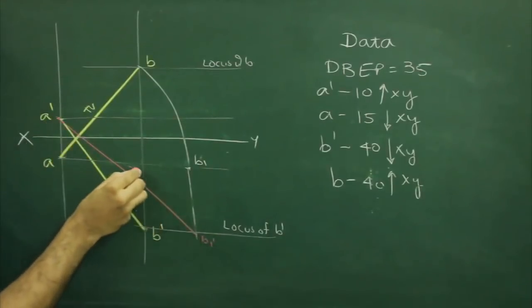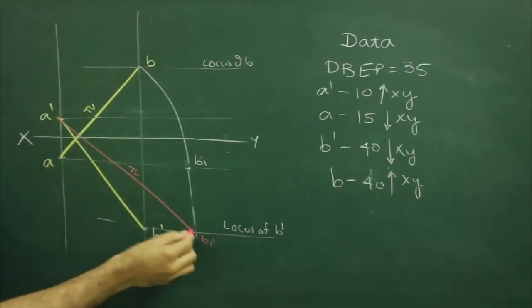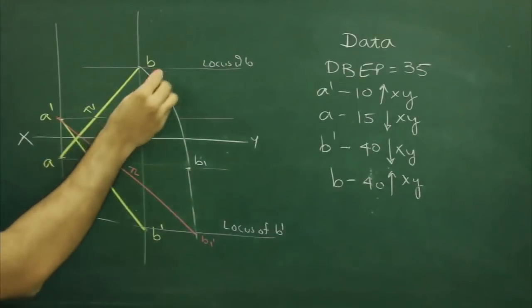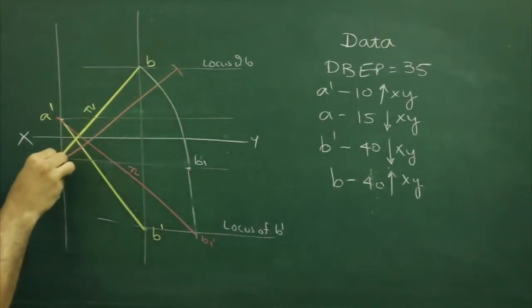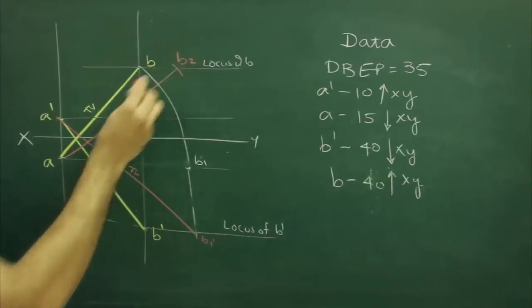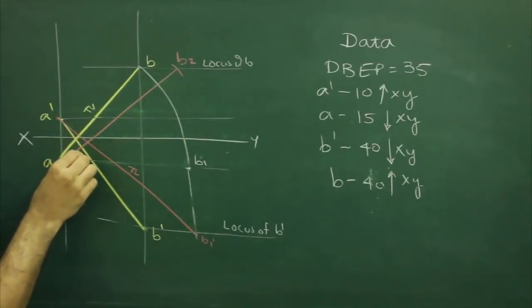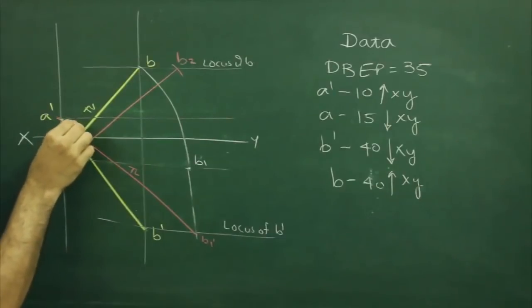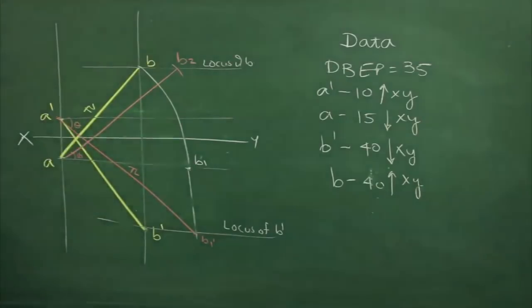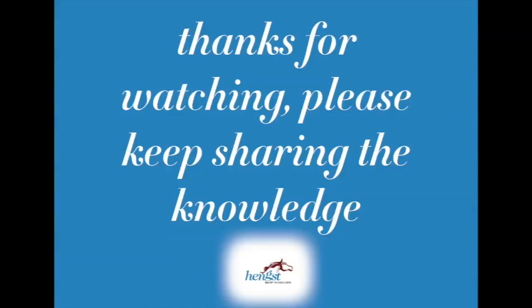This will be your true length. Now, take this true length and from here, we will cut off this side, that will be B2. This angle will be alpha and this angle will be theta. Alright, here we go.